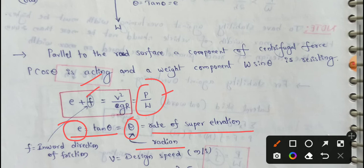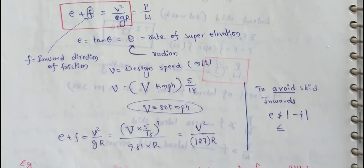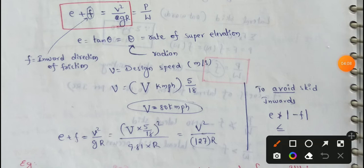Next, F value means inward direction of friction. Next, V means design speed in meter per second. For example, this vehicle's speed is mentioned in km per hour in the problem. If we convert it in meter per second, the vehicle's speed is 5 by 18. The vehicle's meter per second is v-value.